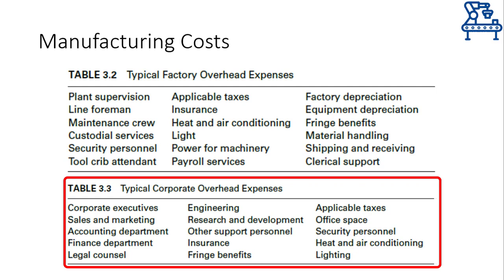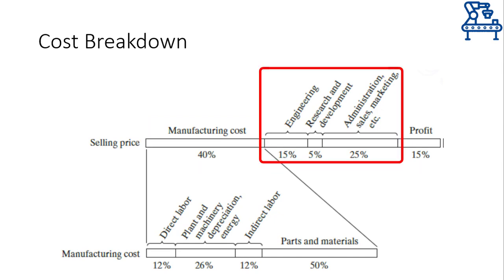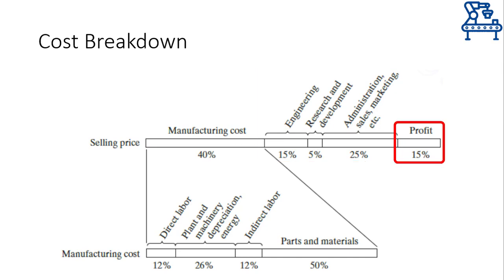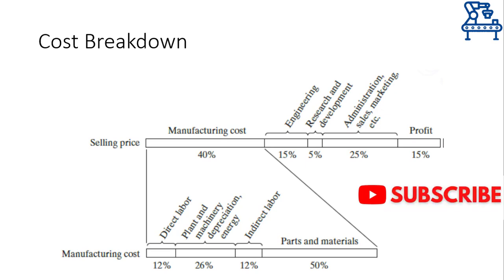Figuring out the costs of various aspects of a manufacturing system better equips us to decide the selling price. Typically, only 40% of the selling price is the actual manufacturing cost, whereas 45% is for the corporate side and 15% is normally the profit. The figure here shows the divisions of manufacturing cost and selling price. Note that this division is not a fixed reference but only a typical division — depending on the product, industry, and economic situation, the percentages may be revised.